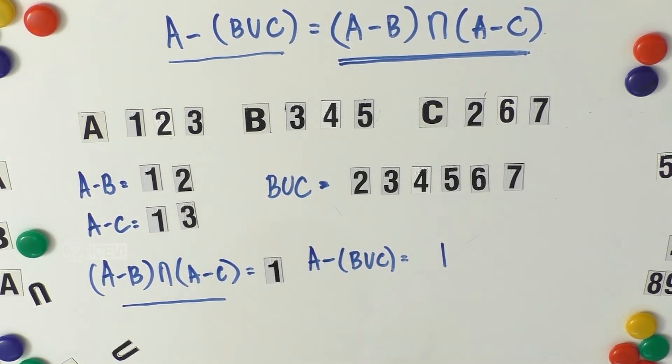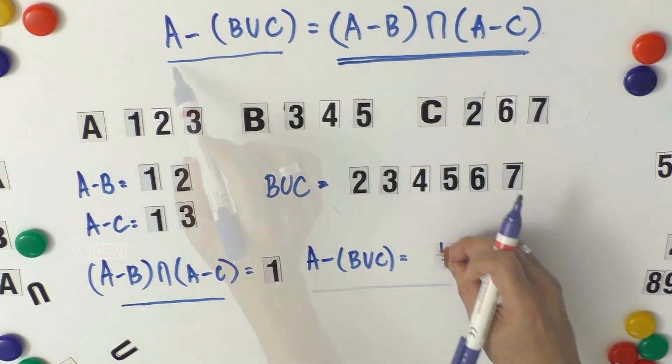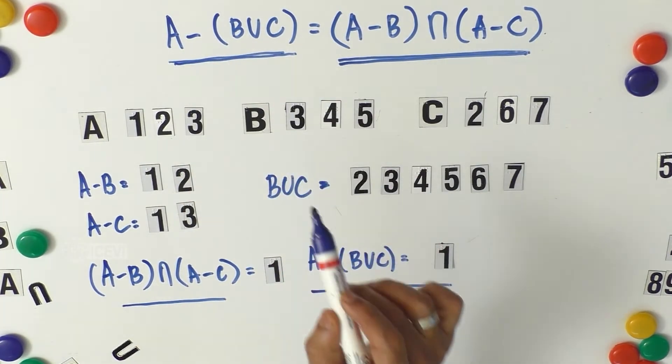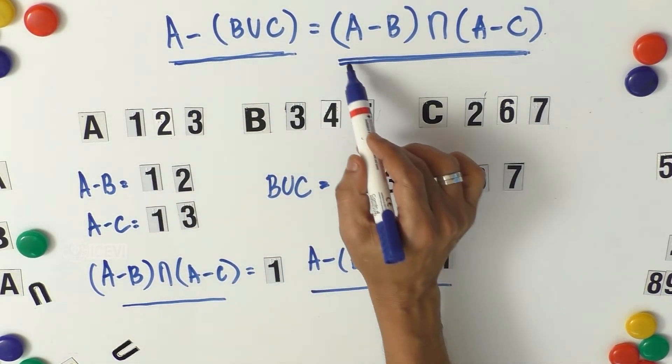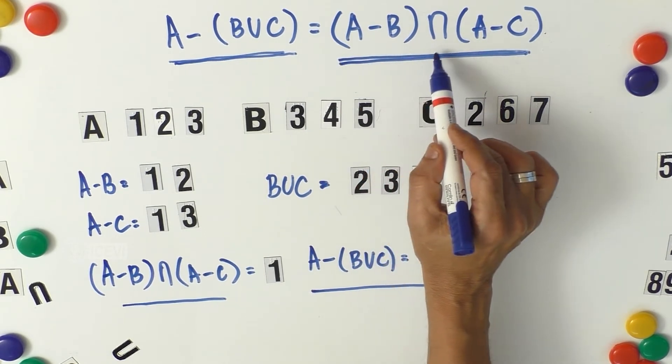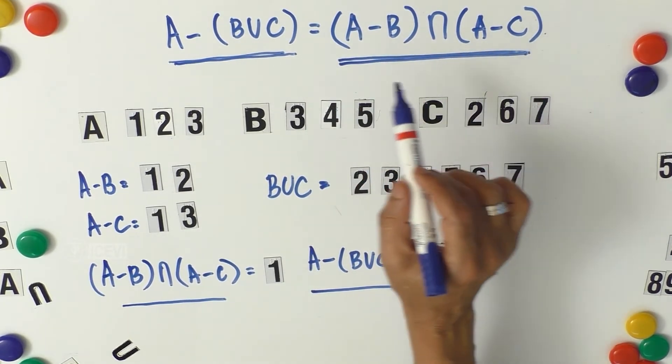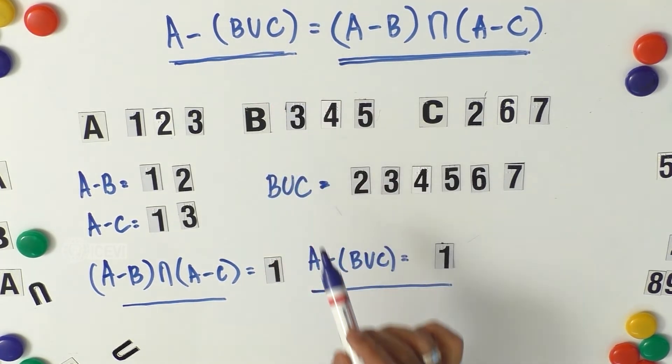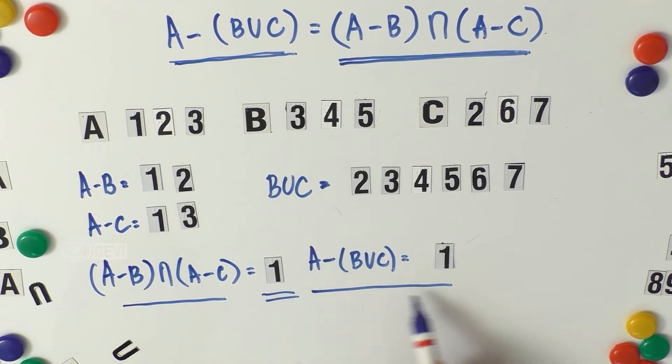Only the element 1. So as per the De Morgan's law of set difference, now A minus B intersection A minus C equals A minus B union C. That is both are 1.